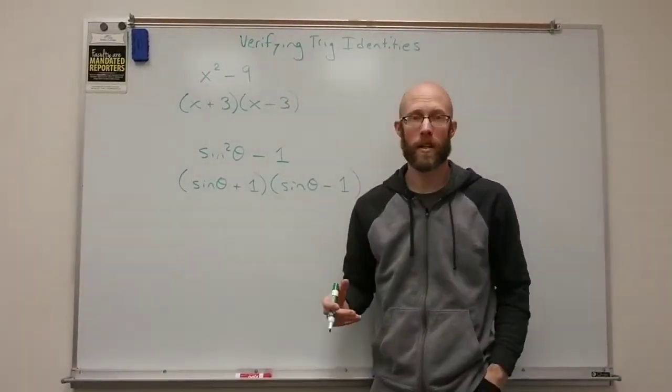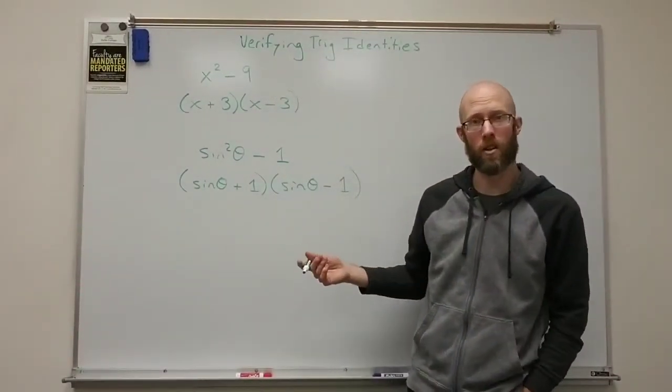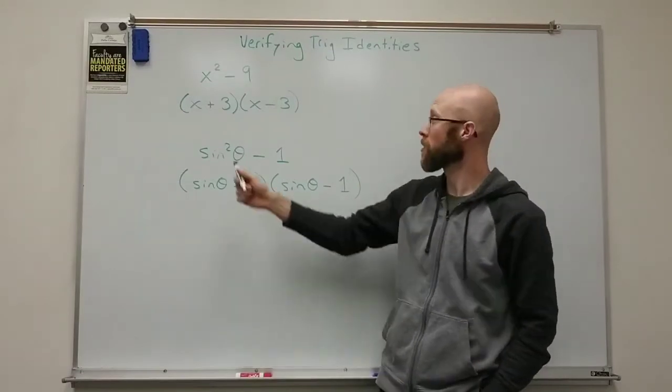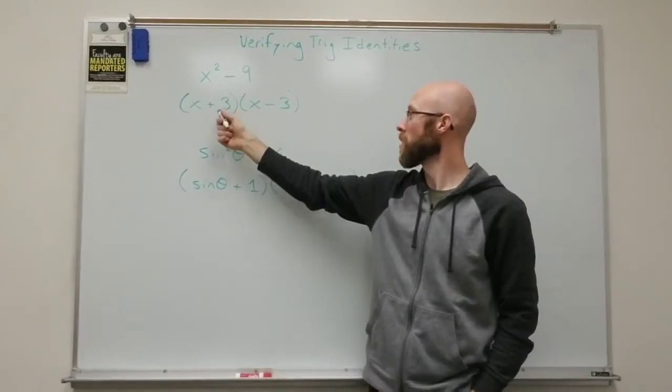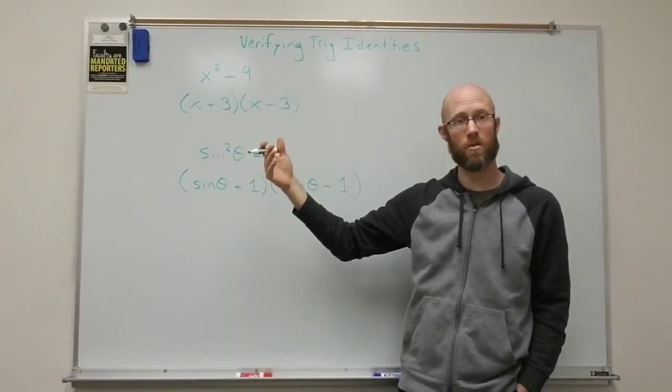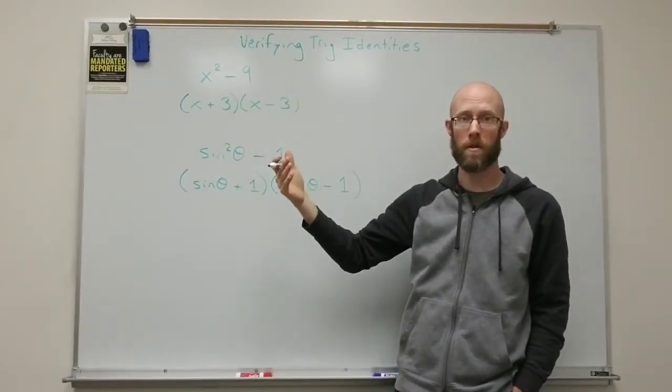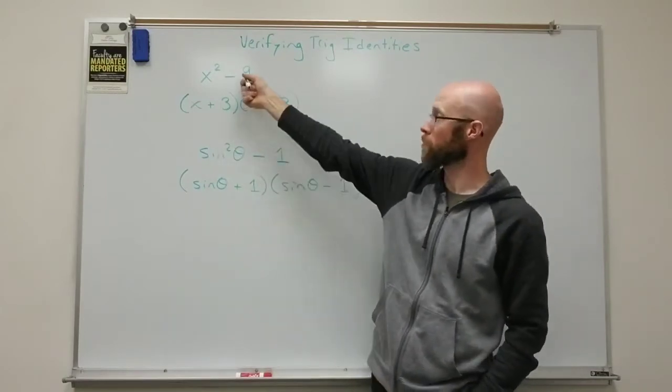And so if you wanted to ever check any of these, check your factoring, you just multiply together. You do x times x is x squared. X times negative three is negative three x. Three times x is three x. Those two, the negative three x and the three x will add up to zero and cancel out.